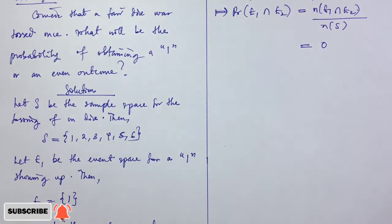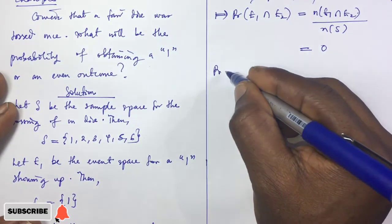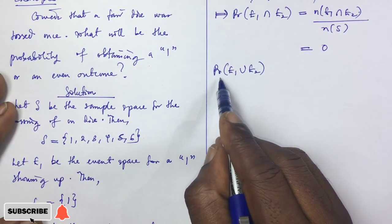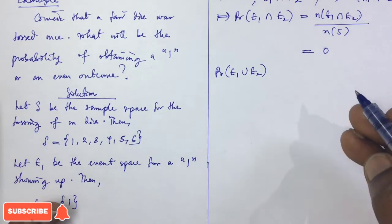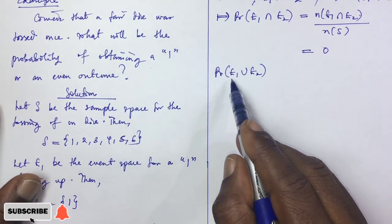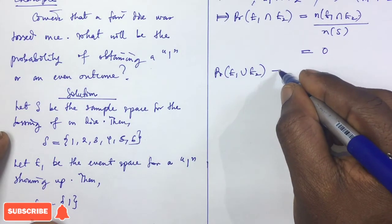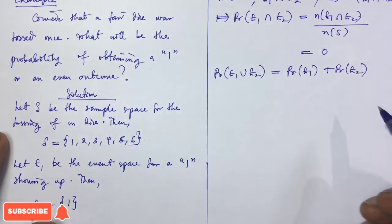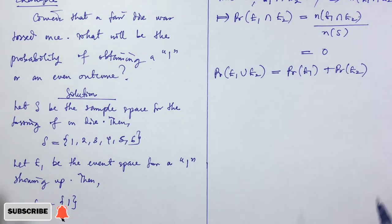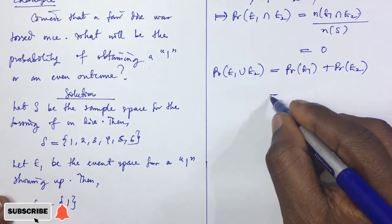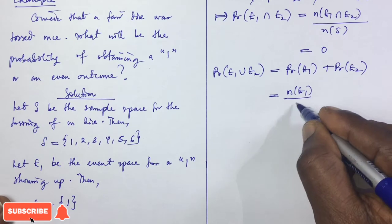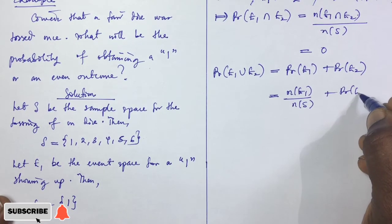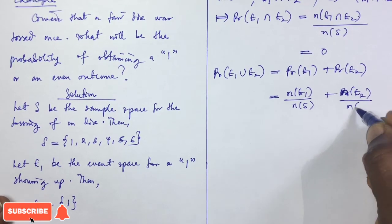Since E1 and E2 are mutually exclusive, E1 ∩ E2 = ∅, so n(E1 ∩ E2) = 0, and P(E1 ∩ E2) = 0/n(S) = 0. This brings us to the addition law of probabilities. Since the events are mutually exclusive, P(E1 ∪ E2) = P(E1) + P(E2) — the probability of obtaining a one or an even outcome.